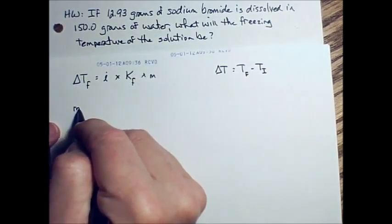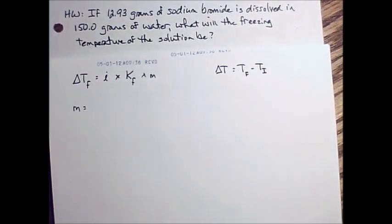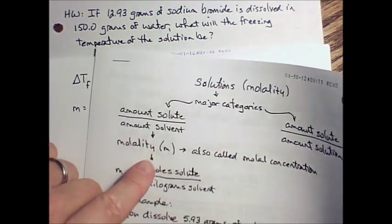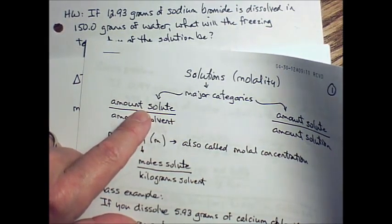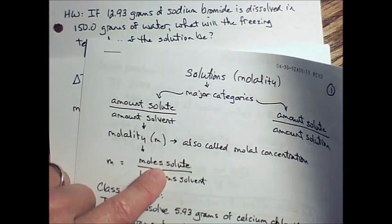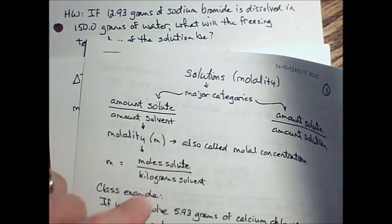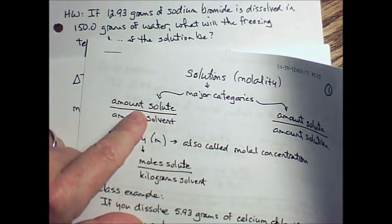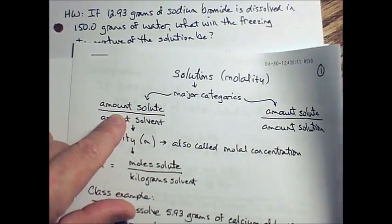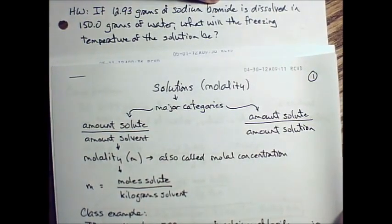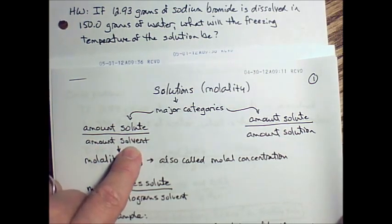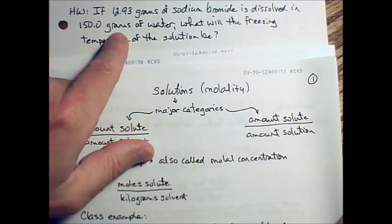Molality is one of the forms of solutions that falls in this category where we have the amount of solute over the amount of solvent. The specific units we want to get to will be moles of solute and kilograms of solvent. But we're simply going to start solving the problem by putting whatever amount of solute appears in the problem, that's the 12.93 grams of sodium bromide, on top of whatever amount of solvent is listed in the problem, that's 150 grams of water.